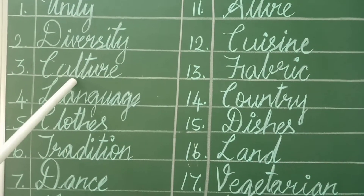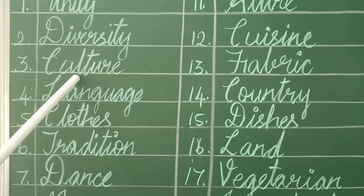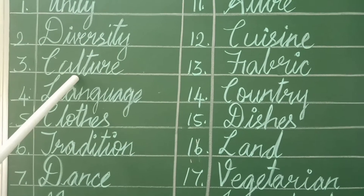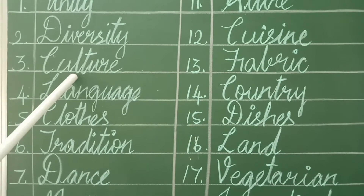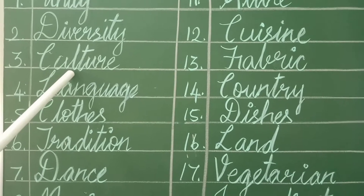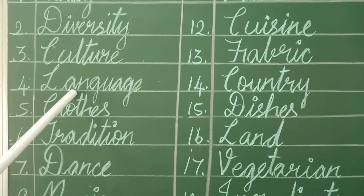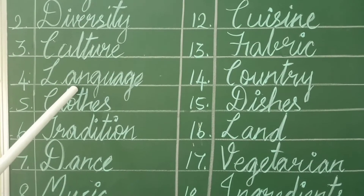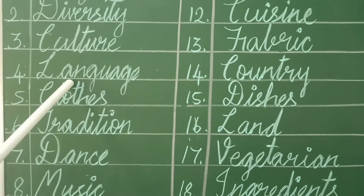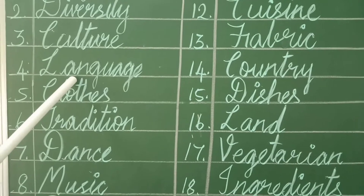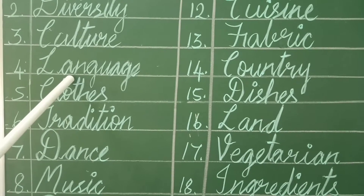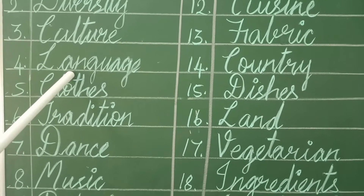Culture — it means the ideas, customs and social behaviour of a particular society. Language — it is a system of symbols and rules for communicating.